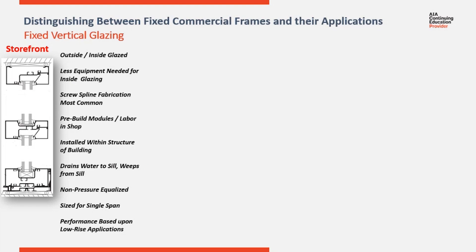Here's a section cut through a typical storefront system and a list of the main attributes. Inside-outside glazing — inside glazing requires less equipment. Screw-spline fabrication allows pre-building modules, and when installed from within the structure, that cuts your labor costs and equipment costs down. It's non-pressure equalized; water drains down the verticals to the sill.